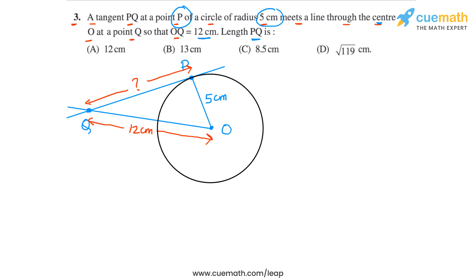And also we can see that the angle at P, this angle will be 90 degrees, because the tangent at the point of contact is perpendicular to the radius through that point. So let's write this: OP will be perpendicular to PQ.